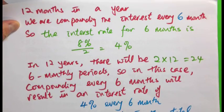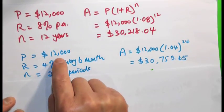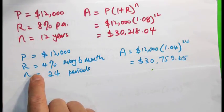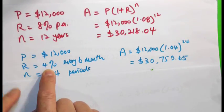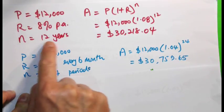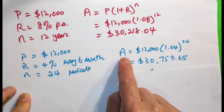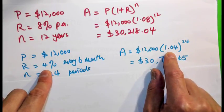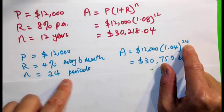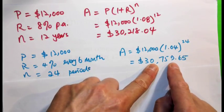Let's calculate the value of the investment. P is still $12,000. R has changed slightly — it's 4% because it's 8% divided by 2, now every 6 months rather than per annum. Instead of 12 years, we have 24 periods. Applying the same formula A equals P times (1 plus r) to the power of n, with (1 plus r) equal to 1.04 and 24 periods, it yields $30,759.65.